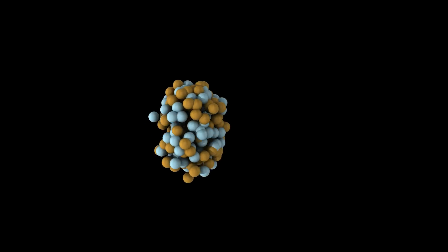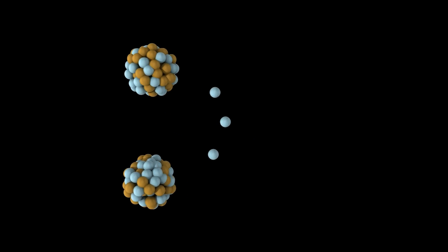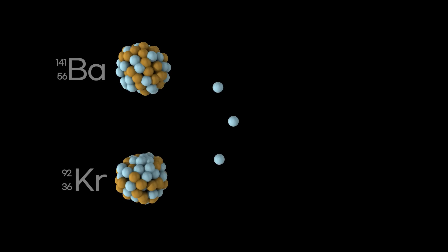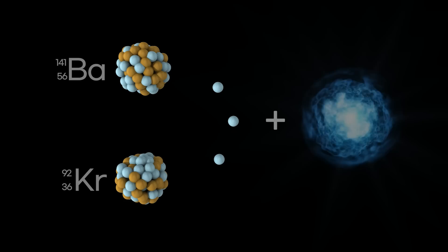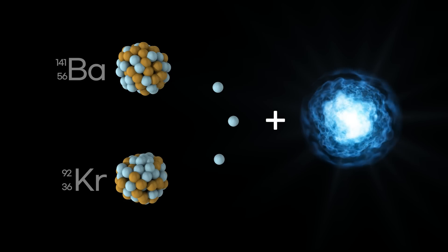When you add a neutron to the nucleus of an atom of uranium-235, the nucleus splits into barium and krypton. In this process, three neutrons and energy occur.